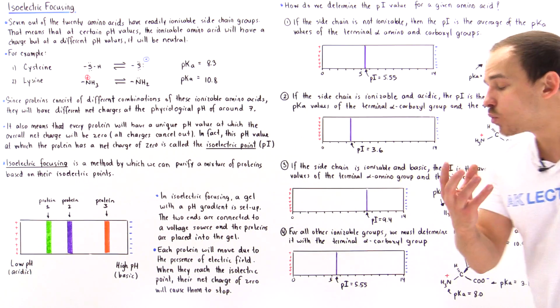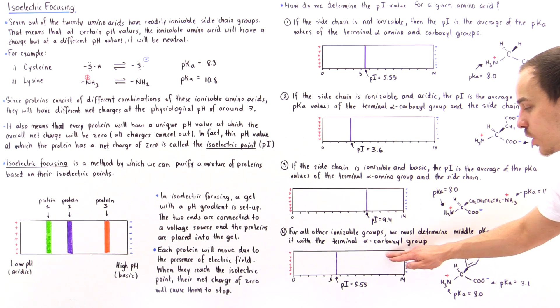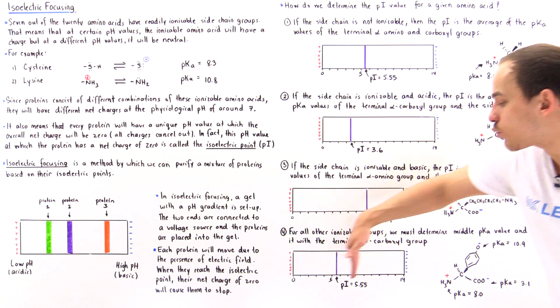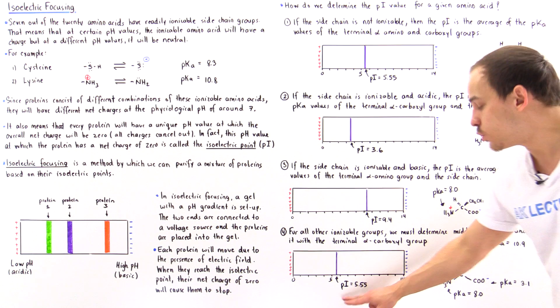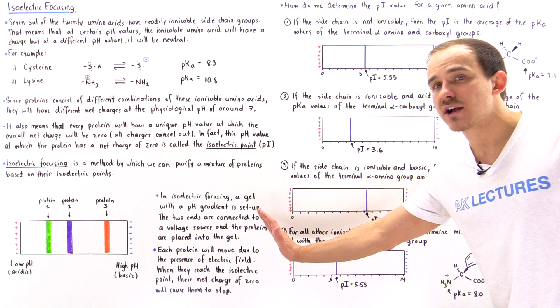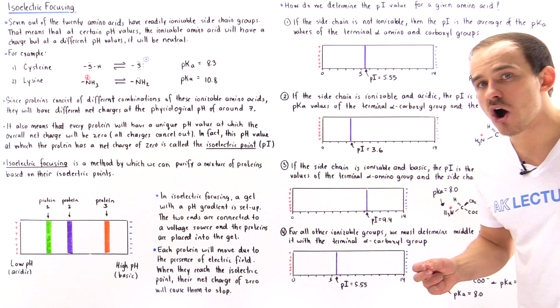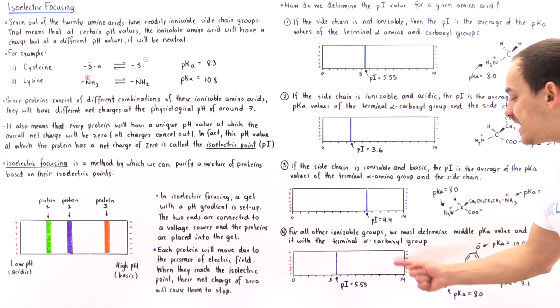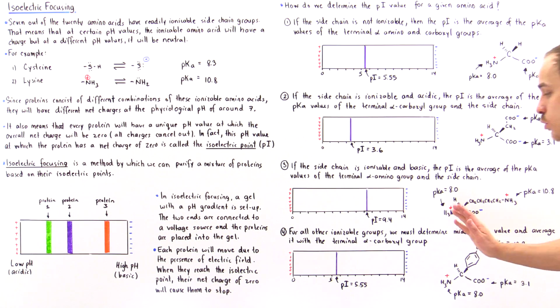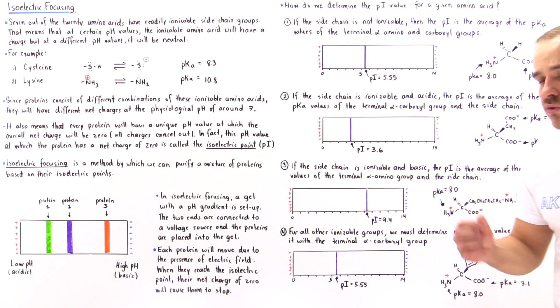Now, what happens if I take this molecule and place it somewhere here, to the right of the pI value? This molecule will tend to want to move back in this direction, and that's because anywhere in this region this molecule will have a net negative charge. Because this negative charge will cause it to move this way, it will gravitate towards our pI value.